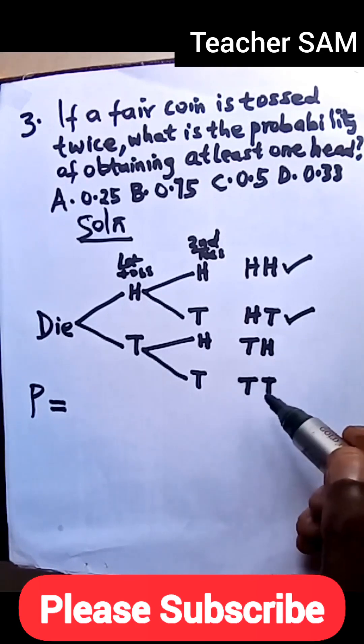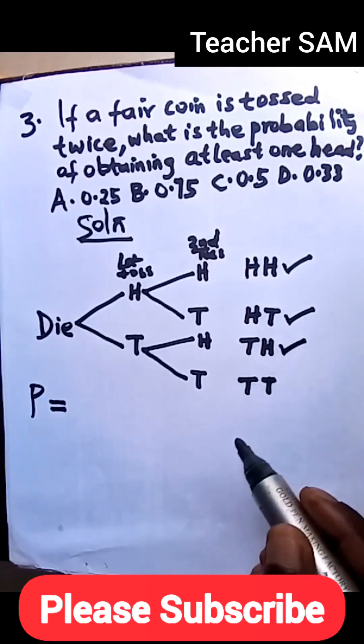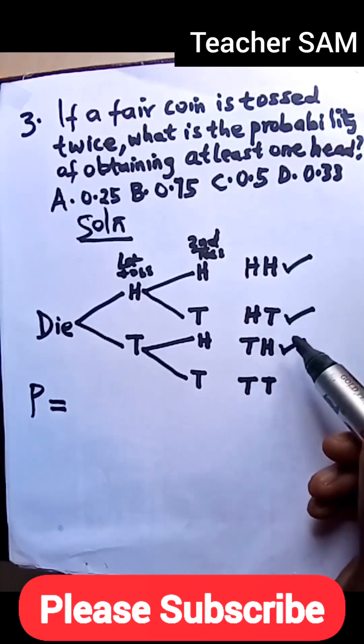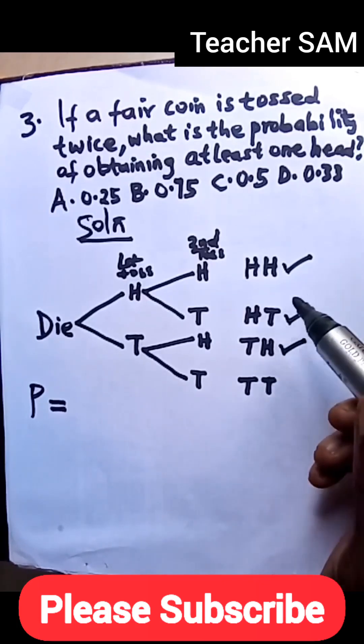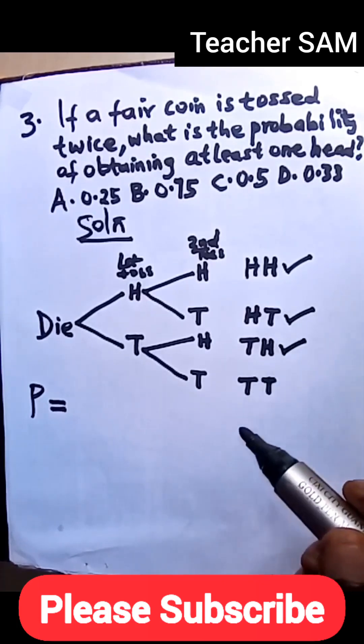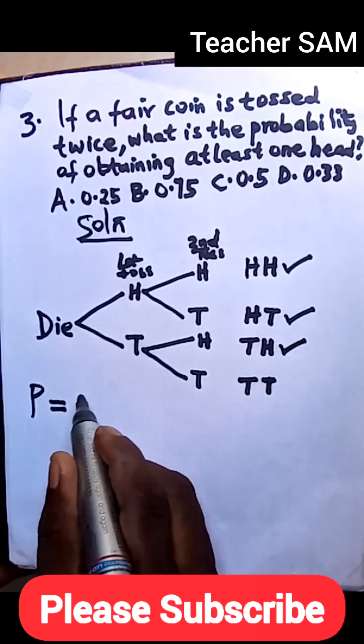Here we have a tail and a head. At least one head, this also satisfies. So we have one, two, three. So we have three outcomes that satisfy our equation. So we have three.